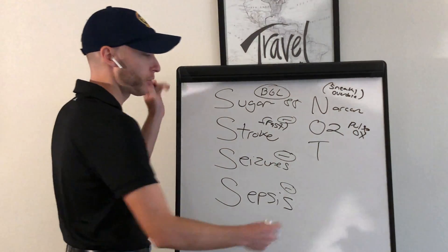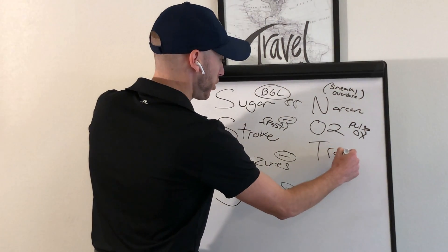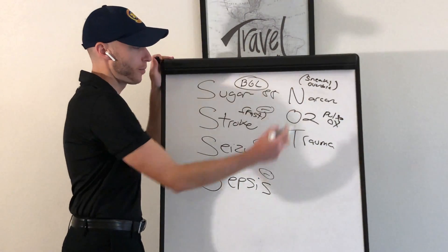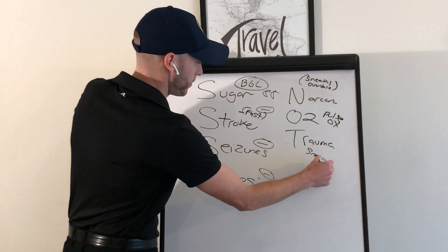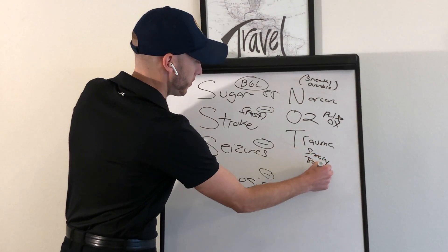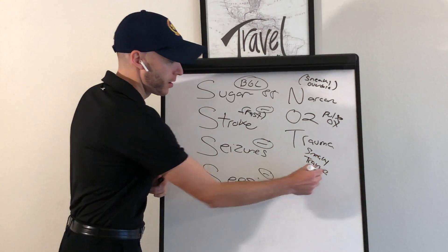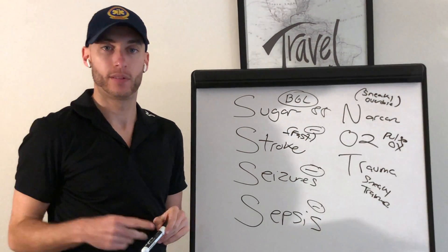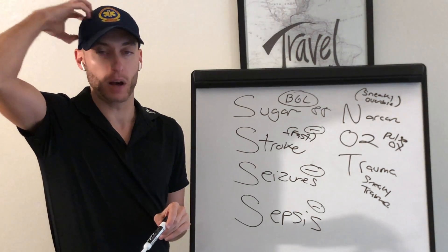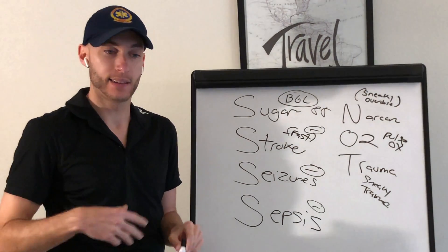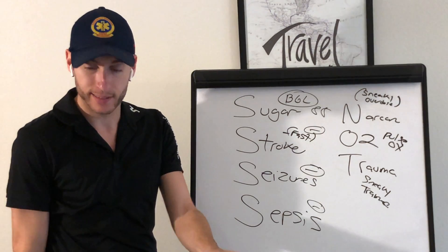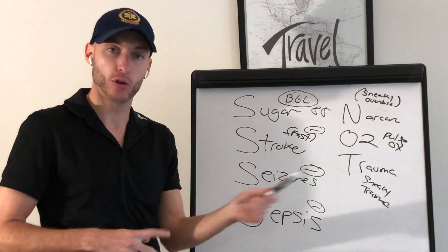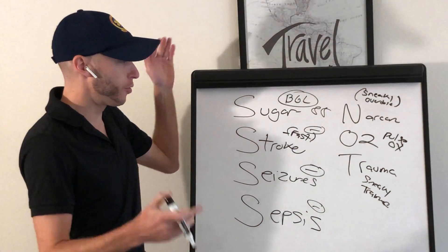T is for Trauma — sneaky trauma. This means remember to expose your patients. Take their hat off; there could be something under there — that's why they're altered. Check their eyes, expose their arms and legs. Make sure you're not missing a sneaky injury, internal bleeding, or sneaky trauma.